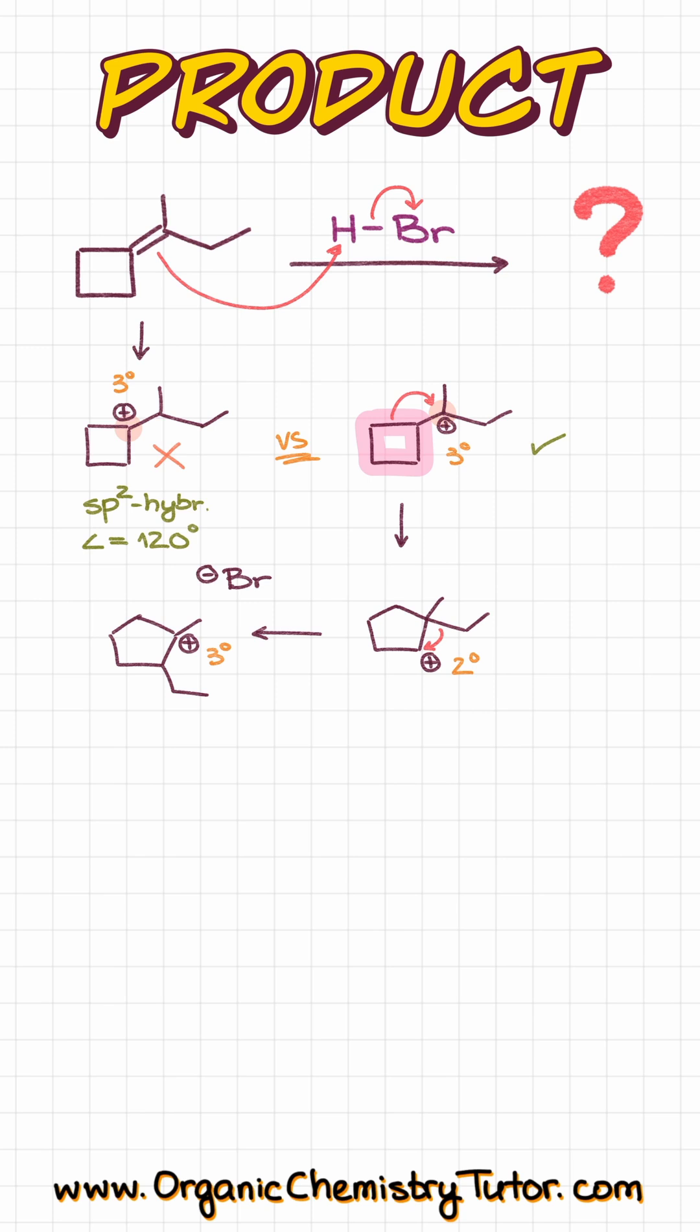And finally, since now we cannot have any other meaningful rearrangements, the bromide is going to attack our carbocation and as a result, we are going to get this molecule as our final product.